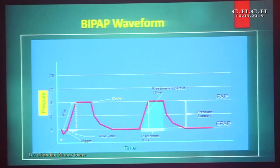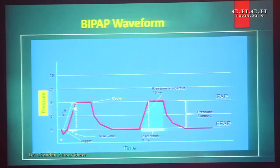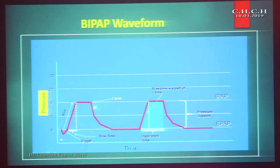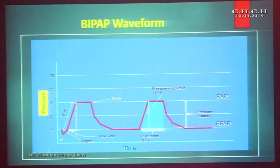This is the pressure-time graph, where some negative pressure is generated by the patient and the ventilator senses it, then delivers the preset pressure — this is IPAP. The total time when IPAP is applied is the inspiratory time. The transition from IPAP to EPAP is the cycle, followed by the expiratory time. The trigger to peak IPAP is called rise time, and the difference between IPAP and EPAP is pressure support.